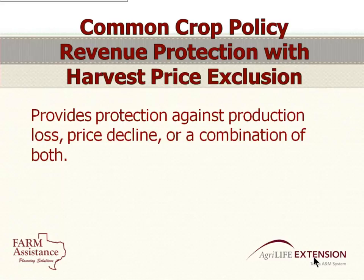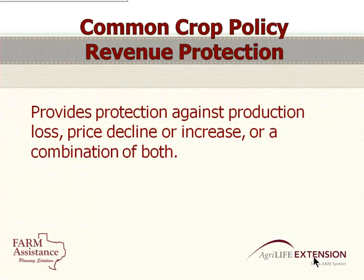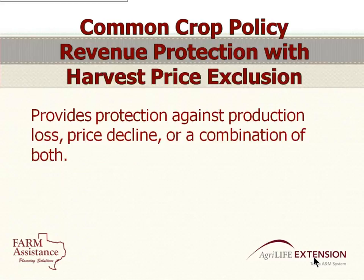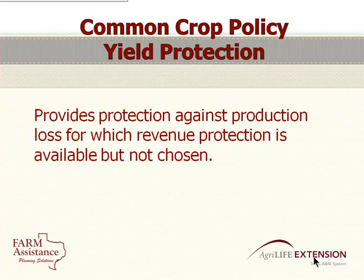If it's with a harvest price exclusion, it protects against just price decline. The reason that price increase is something you're protecting against is if you've got a production contract and you're committing to so many bushels — you're at risk if the price goes up because you've got a cash forward contract. For cotton producers signing a bale contract, you really need to buy Revenue Protection with the harvest price option, because that protects you if you don't produce a crop and the price goes up. Yield protection — the APH — strictly protects against a production loss at whatever the spring price was.